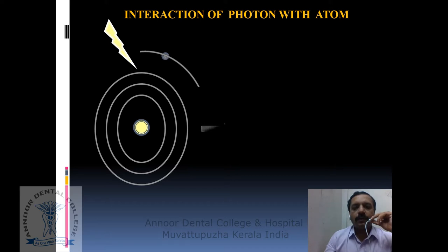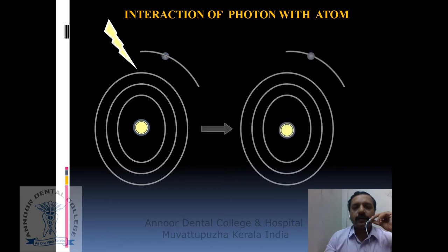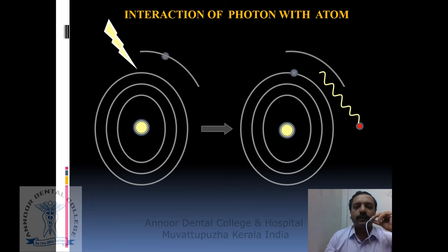However, in the excited state, the electron is unstable and will soon decay back to the ground state, releasing stored energy in the form of an emitted photon. This process is termed as spontaneous emission.